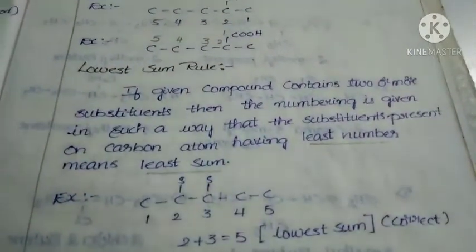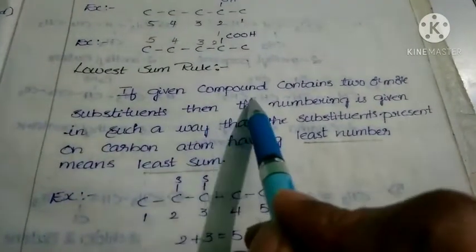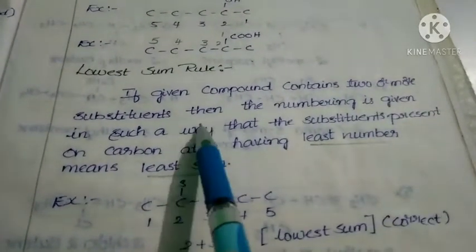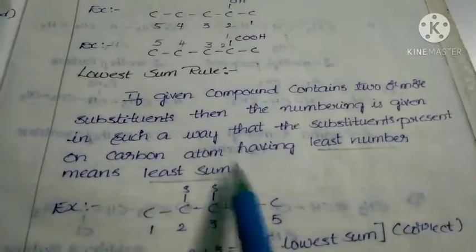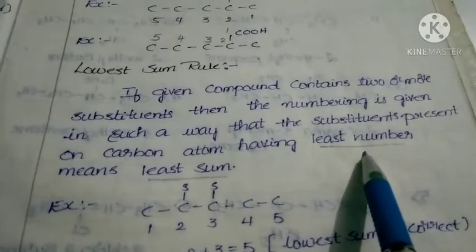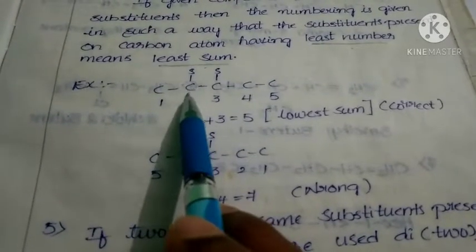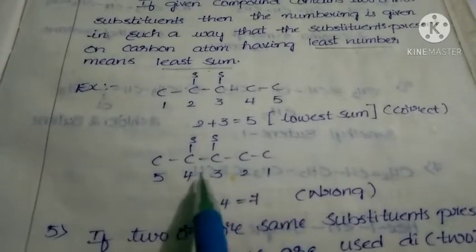The next rule is the lowest sum rule. If a given compound contains two or more substituents, the numbering is given in such a way that the substituents are present on carbon atoms with the least sum of numbers. For example, if two substituents are present: numbering from left to right gives positions two and three, with a sum of five. Numbering from right to left gives positions three and four, with a sum of seven. Since five is less than seven, we follow the lowest sum rule and number from left to right.